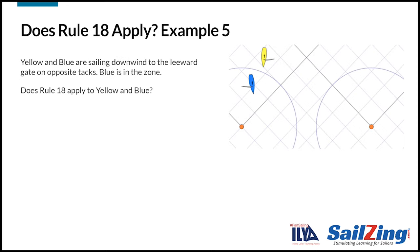Now let's do some leeward mark examples. Yellow and blue are now sailing downwind near the leeward gate. Does Rule 18 apply here?